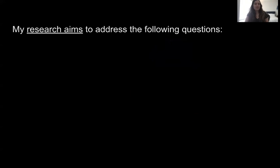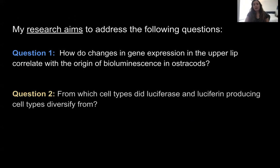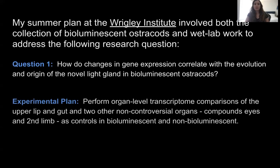My research aims to address two questions: how do changes in gene expression in the upper lip correlate with the origin of bioluminescence in ostracods, and from which cell types did luciferase and luciferin-producing cell types diversify? For the first question, I wanted to collect bioluminescent Vargula sugii and a non-bioluminescent ostracod and perform organ-level transcriptome comparisons of the upper lip, gut, and two other organs to quantify gene expression changes and reveal unique gene sets involved in the origin of the light organ.